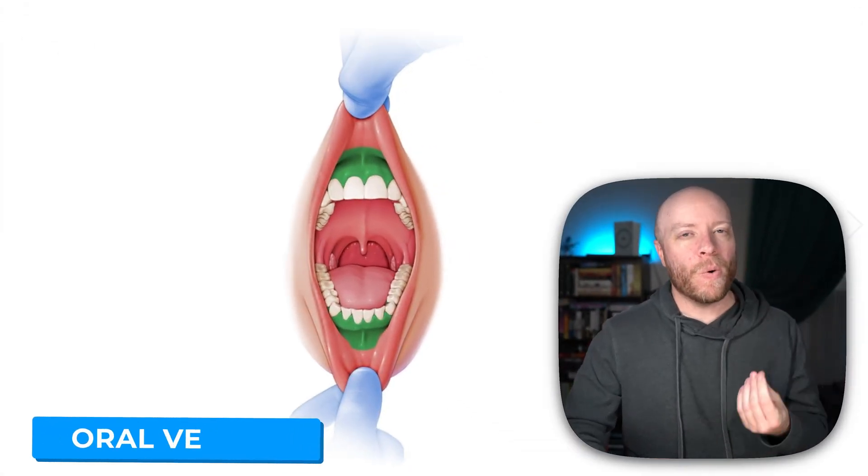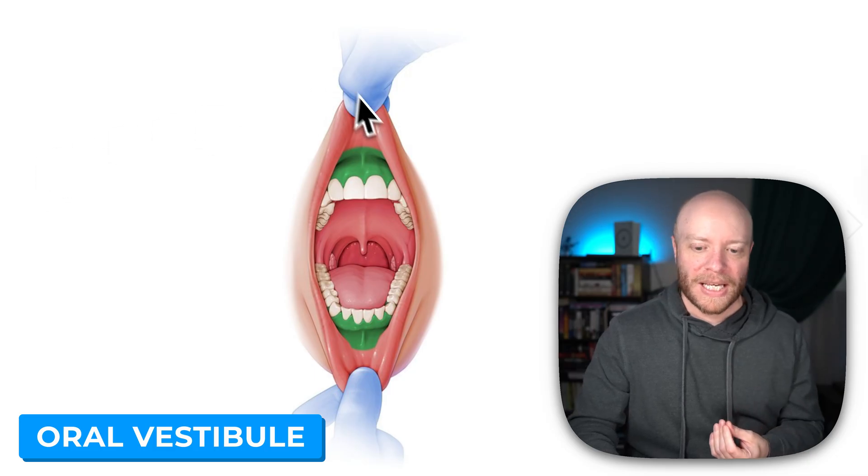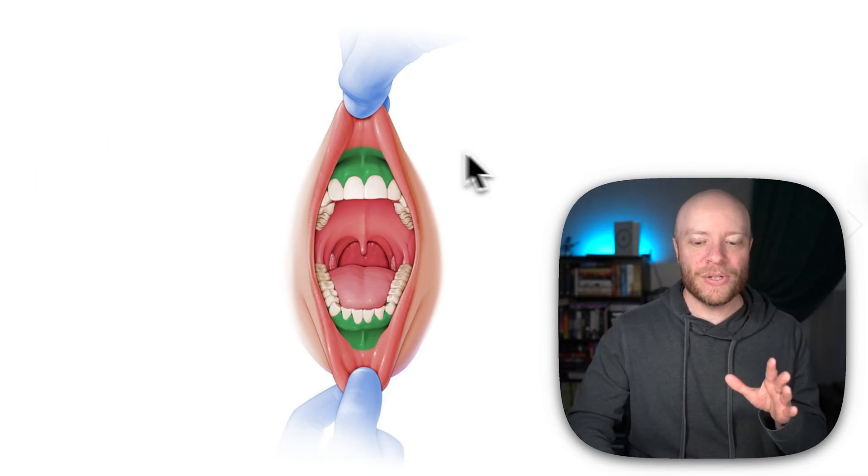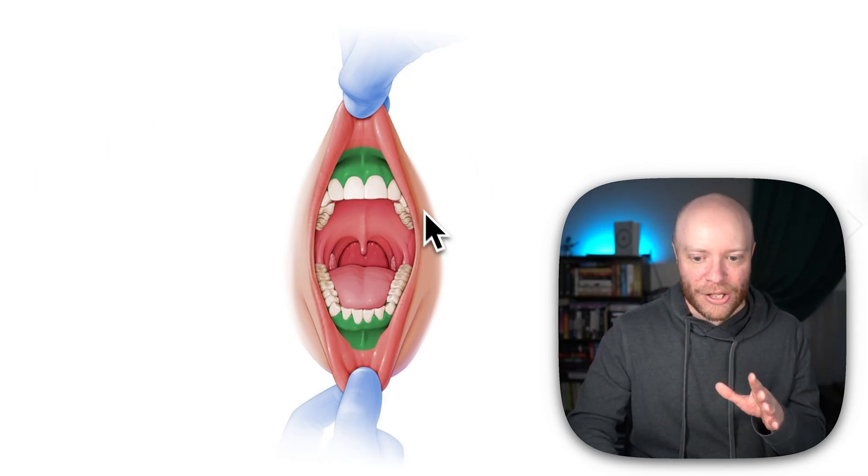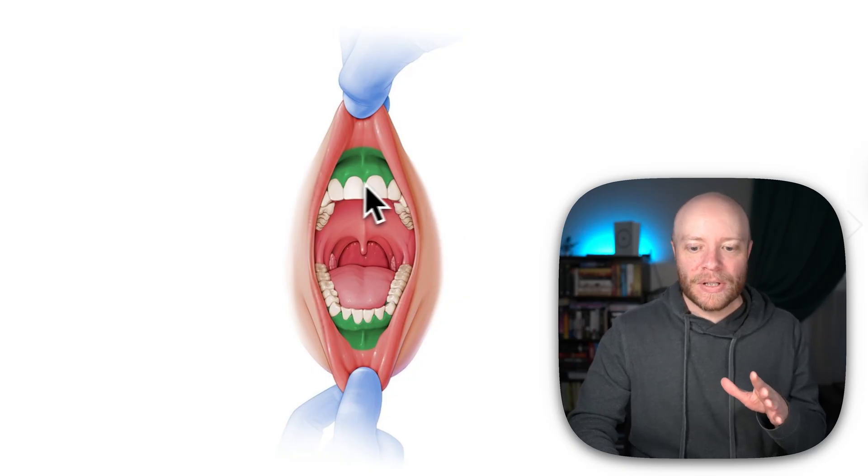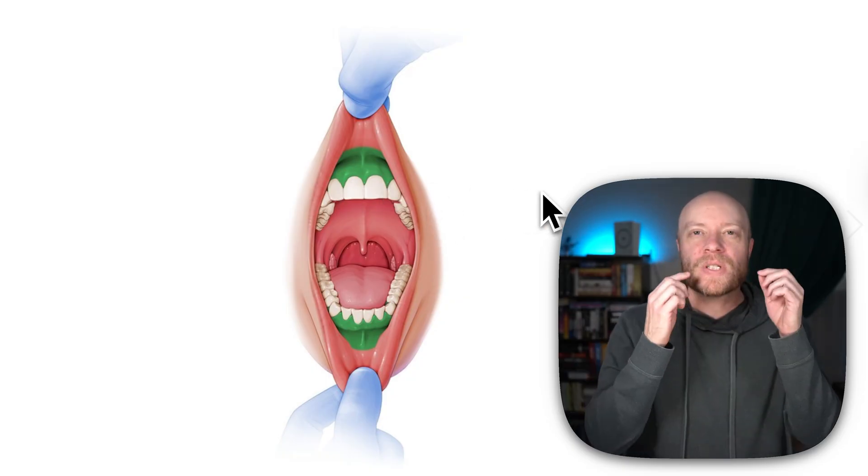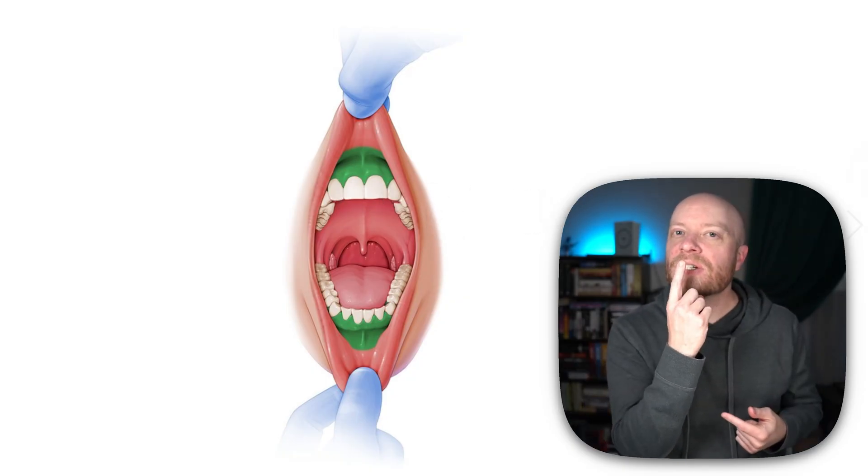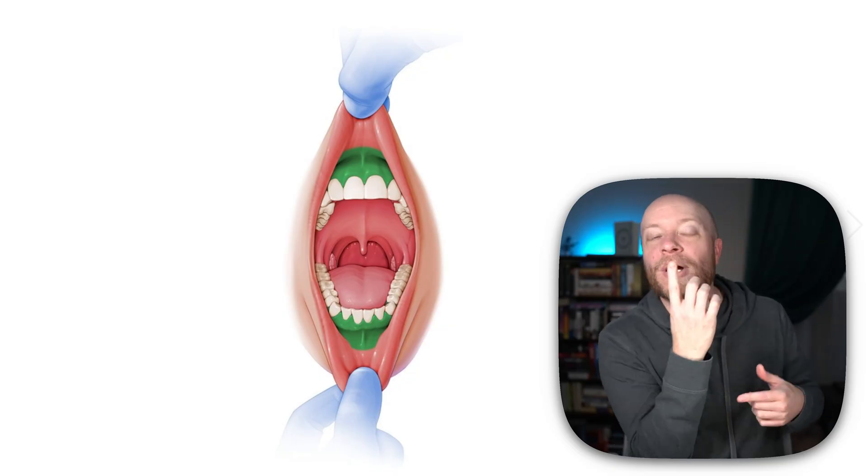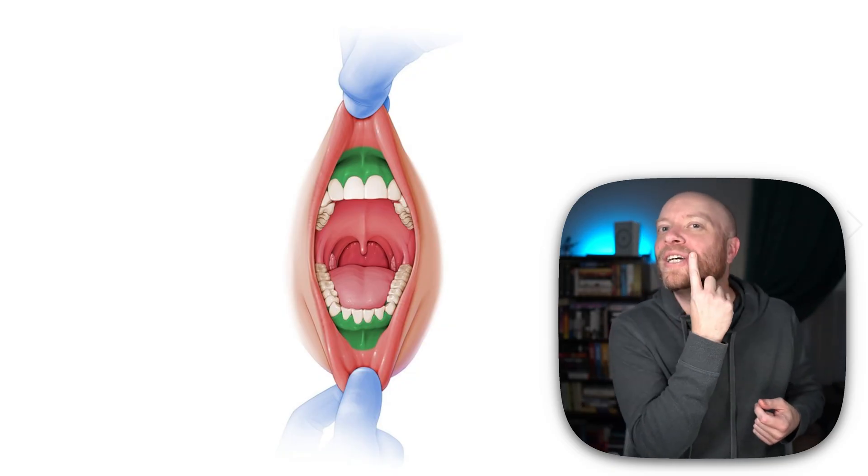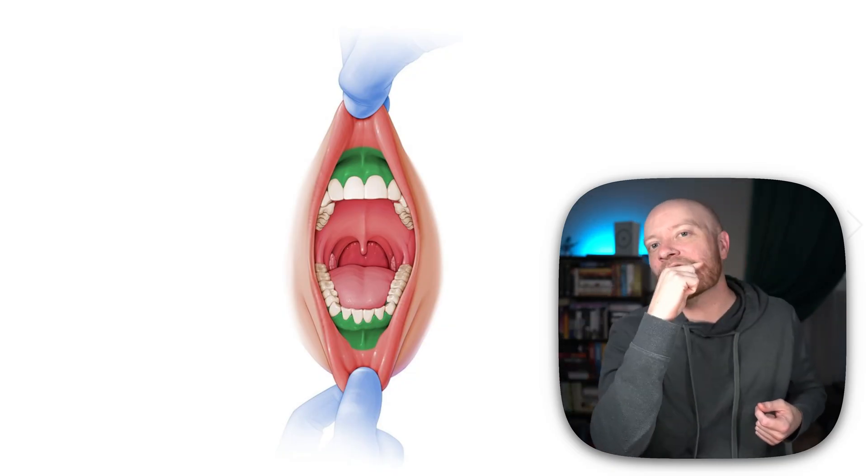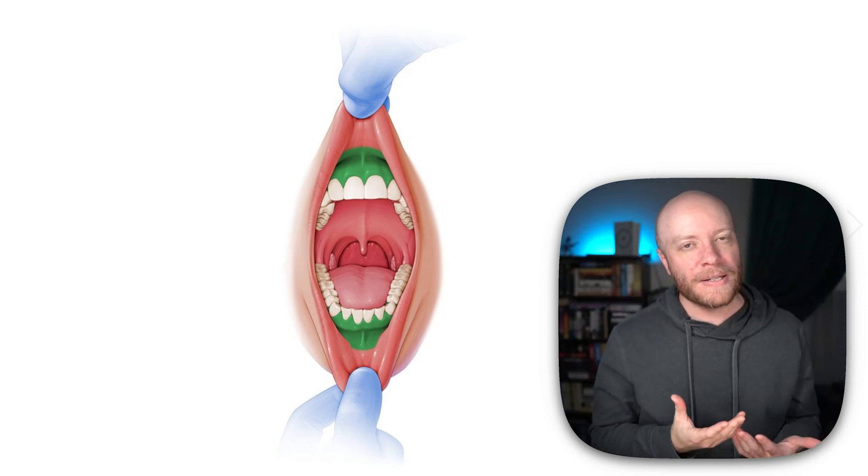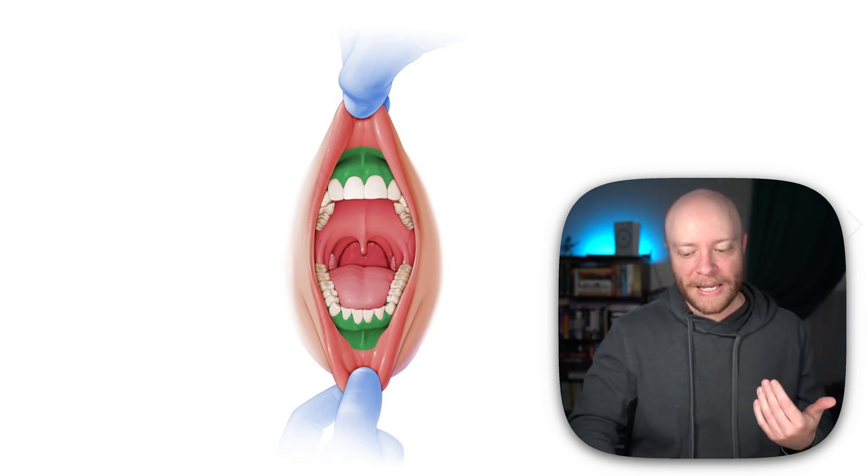First up is what is called the oral vestibule. This is the space between your lips and your cheeks, and then your gums and your teeth. You can imagine there's a space just in there, and you could kind of slide your fingers around in that space. All of that would be the oral vestibule.